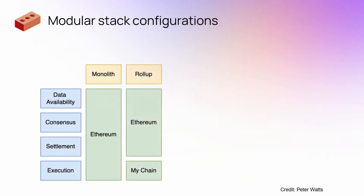Then you have roll-ups. In roll-ups, the L1 handles the first three components — data availability, consensus, and settlement — but not execution. And the roll-up itself handles execution of the chain.